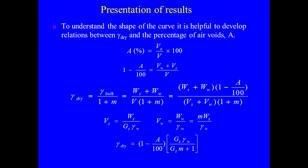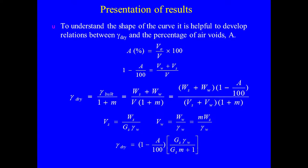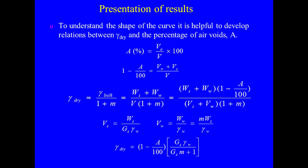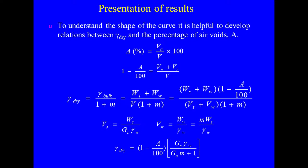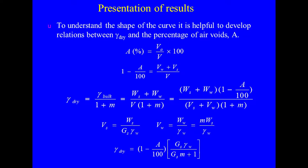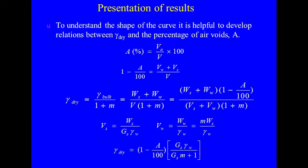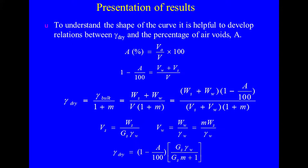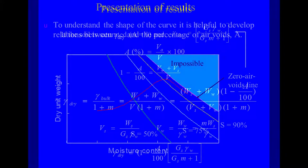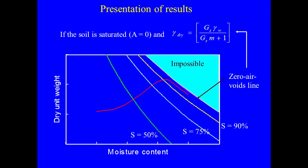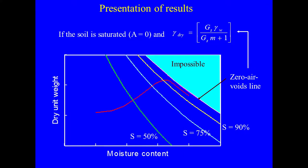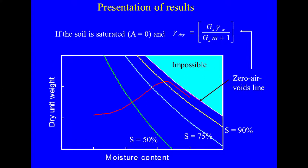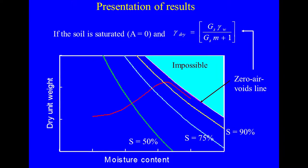In the presentation of results, to understand the shape of the curve, it is helpful to develop a relation between dry unit weight (γ_dry) and the percentage of air voids (A). The formula is: γ_dry = (1 − A/100) · G_s · γ_w / (1 + G·M). Using this, we can draw lines for 0% air voids, 80% saturation, 70% saturation, or 50% saturation. When the soil is saturated, A = 0, giving the zero air voids line.